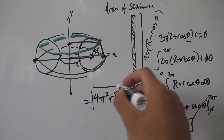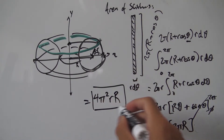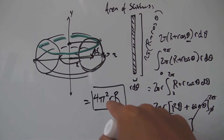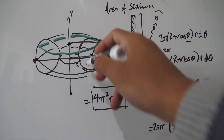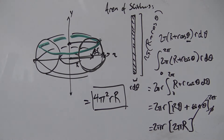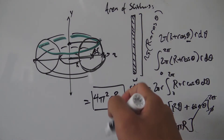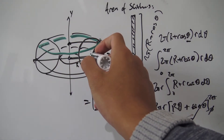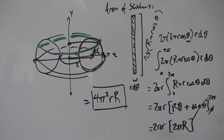So our final formula for the surface area of the donut is 4π²Rr, where little r is the radius of the body of the donut, and big R is the distance from the origin out to the middle of the body of the donut.